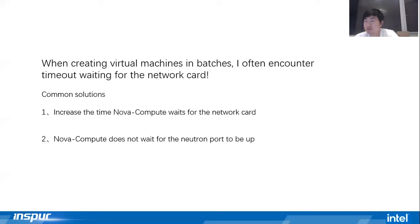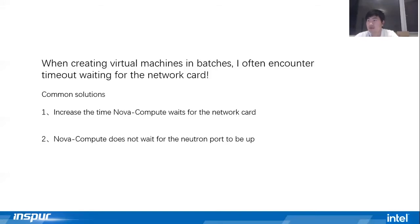But each solution has its own problems. One is that it takes a long time to create a virtual machine. The other is that although a virtual machine can be created quickly, it cannot obtain an IP address through DHCP, or because there is no flow table the network is actually blocked. You need to wait for the network card to come up before the network is really connected and the virtual machine can be used. Obviously, neither of these two solutions fundamentally solves the problem.